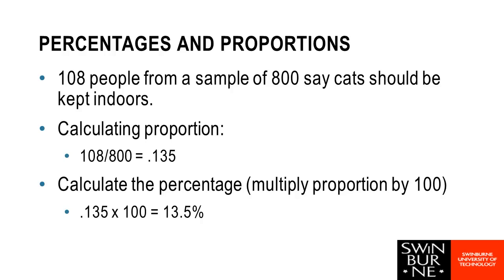One other quick refresher for this first week is percentages and proportions. When we have some kind of category and want to work out a proportion, we start with how many of our particular item we're interested in. In this example, 108 people out of a sample of 800 say that cats should be kept indoors. To work out the proportion, we divide 108 by 800, which gives 0.135. To represent that as a percentage, we multiply by 100 — that's 13.5%.